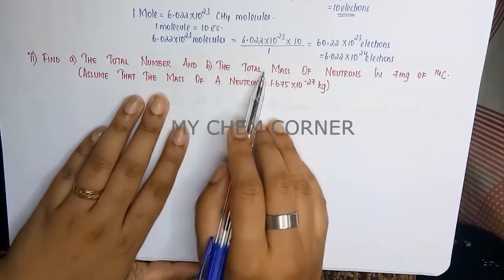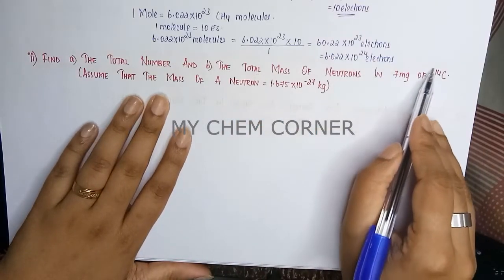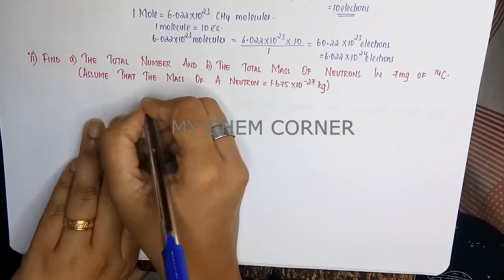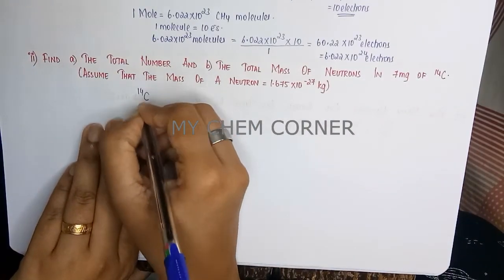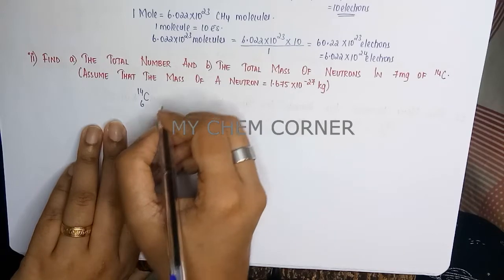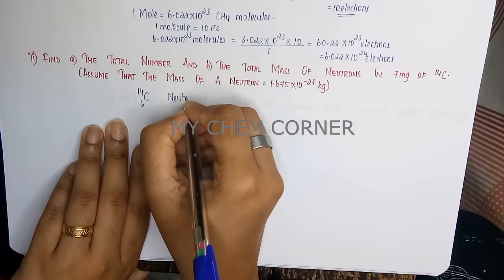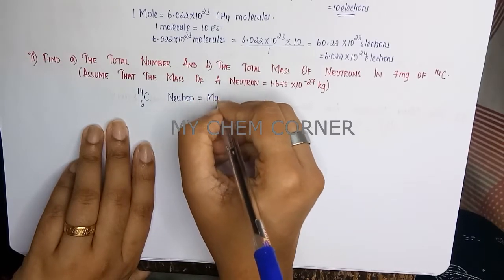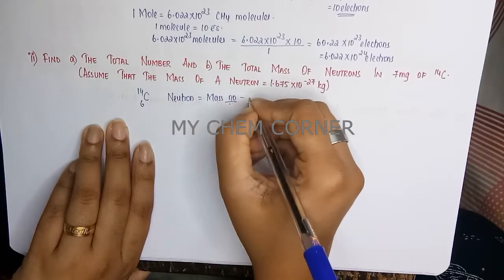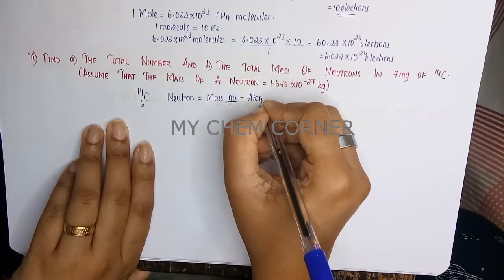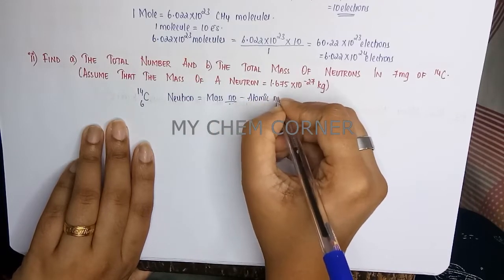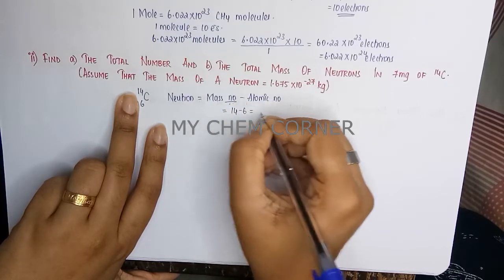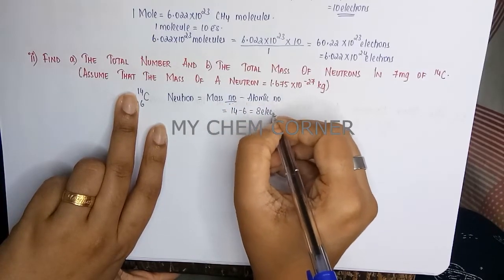First we need to calculate what is the number of neutrons in this particular isotope of carbon. So here carbon with a 14 isotope, the neutron count is: neutron equals mass number minus atomic number. Now for this, mass number is 14 minus 6, therefore you get 8 neutrons.